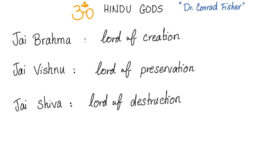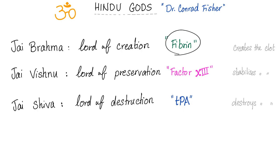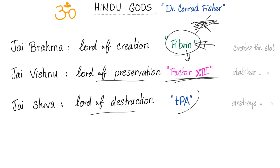The lord of creation is fibrin — fibrin creates the clot, because it traps the red blood cells within the fibers, and this is called secondary hemostasis. The lord of preservation is factor 13, by stabilizing fibrin into stabilized fibrin. The lord of destruction is TPA, which converts plasminogen into plasmin. Plasmin destroys the clot and restores the function. Fibrin creates the clot, factor 13 stabilizes the clot, TPA destroys the clot — creation, preservation, destruction.